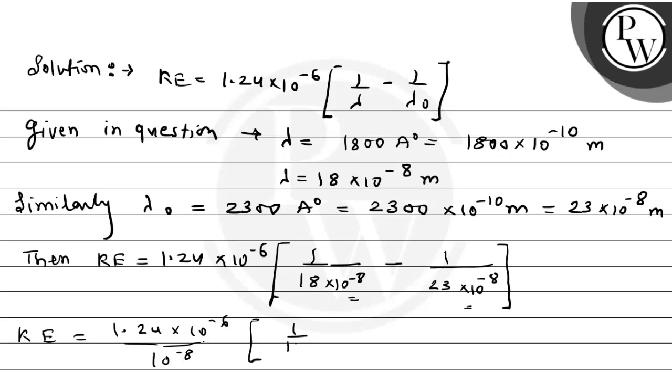When you solve this, students, then you will get 1.5 electron volt. This is the calculated value.